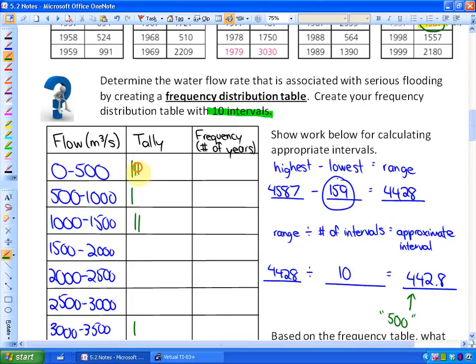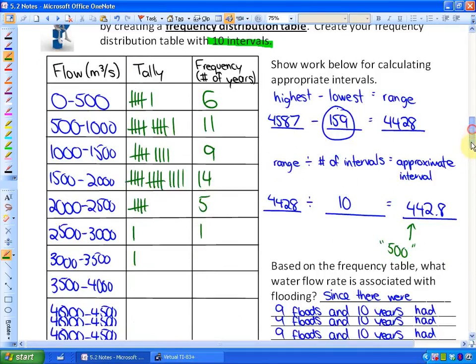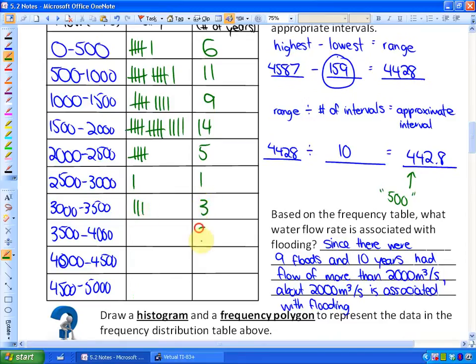Okay. So here's the tally. After tallying up the information, we found out that there were a total of 6 flow rates between 0 and 500. There were a total of 11 flow rates between 500 and 1,000. There were 9. Again, you might want to pause this and try it on your own. A total of 14 between 1,500 and 2,000. A total of 5 here. A total of 1. A total of 3. A total of 0. A total of 0. And a total of 1. So that's our information. So what we've done is we've taken these 50 years and divided into intervals of different flow rates as far as water goes.